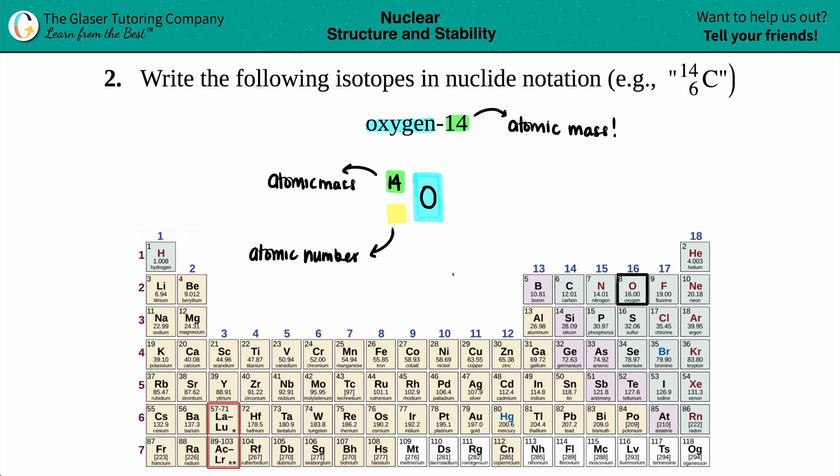That's always the number of protons. On the periodic table, there are whole numbers—don't look at the decimals—so 5, 6, 7, 8, 9, 10, 18, 36, those are your atomic numbers. For oxygen, it's going to be 8, so 8 goes on the bottom, and that's basically the answer.